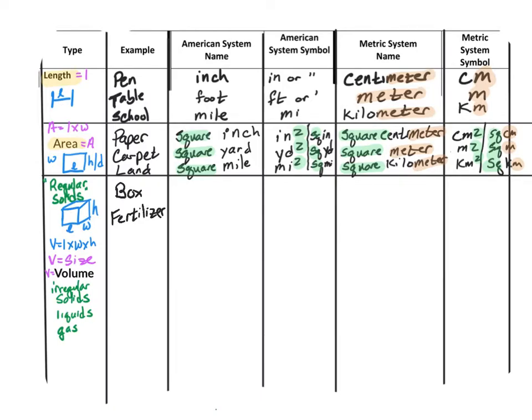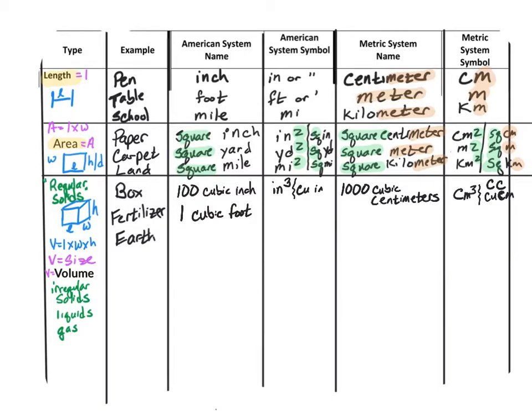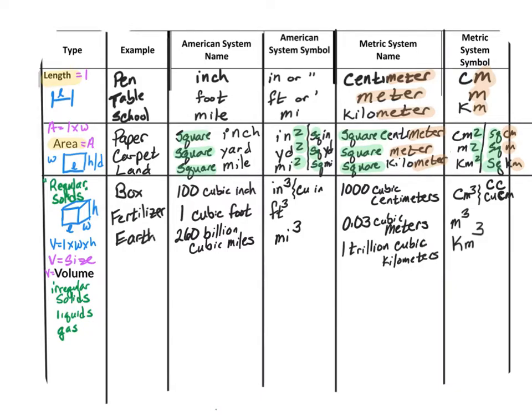So let's look at a box, a bag of fertilizer, and the earth. A small shipping box might be 100 cubic inches, abbreviated IN cubed or CU IN. That would be close to a thousand cubic centimeters, abbreviated CM cubed or CU CM. A small bag of fertilizer is about one cubic foot, most commonly abbreviated FT cubed. That's only 0.03 cubic meters, abbreviated meter cubed. The volume of the earth is about 260 billion cubic miles, abbreviated MI cubed. That's close to a trillion cubic kilometers, abbreviated KM cubed.